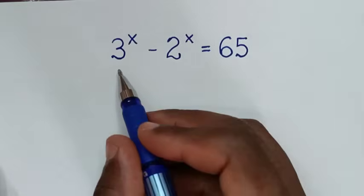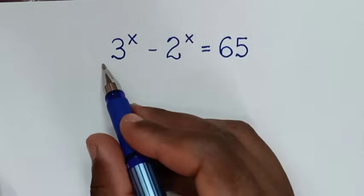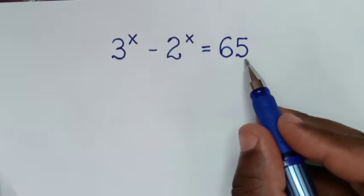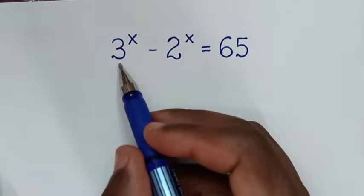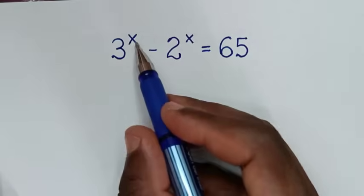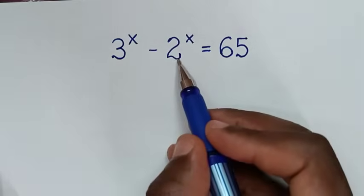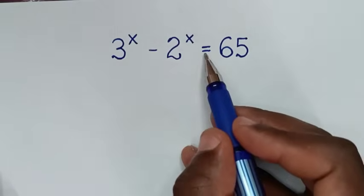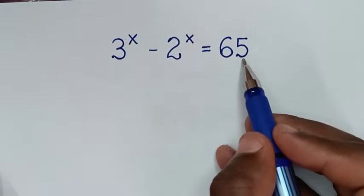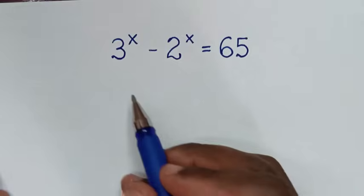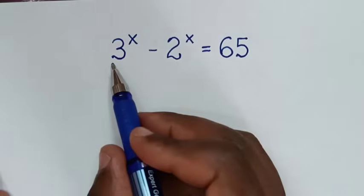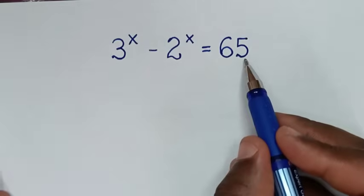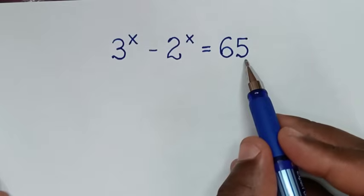Hello, you are welcome to solve this math problem, which is 3 power of x minus 2 power of x is equal to 65. We need to find the value of x from this equation.